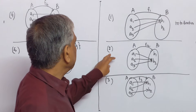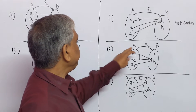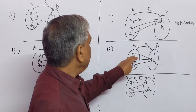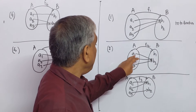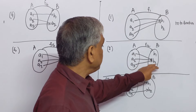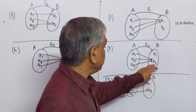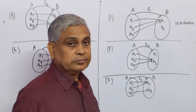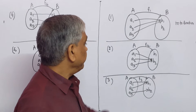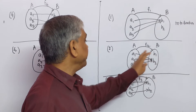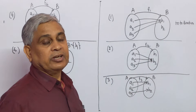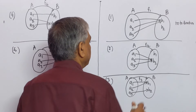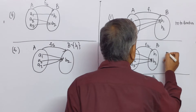We see that F2 is a function in which image of A1 is B2, image of A2 is B2, image of A3 is B2. Therefore, B1 has no pre-image. Hence, this function is also an INTO function.